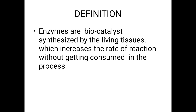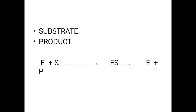In brief: enzyme combines with substrate to form an enzyme-substrate complex, and then the enzyme is released without being consumed and you get the product. So: enzyme plus substrate gives enzyme-substrate complex — that is a reversible reaction — to finally give enzyme and product. The enzyme only accelerates the reaction.